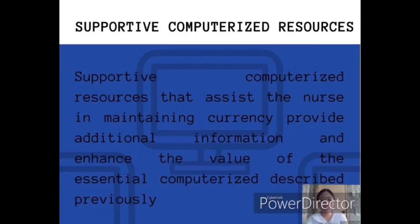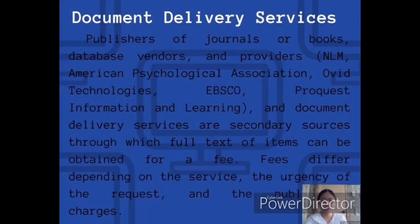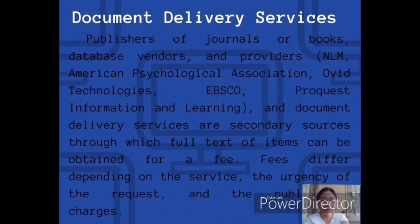Supportive computerized resources that assist the nurse in maintaining currency provide additional information and enhance the value of the essential computerized resources described previously. First, document delivery services: publishers of journals or books, database vendors, and providers such as NLM, American Psychological Association, Ovid Technologies, EBSCO, and ProQuest Information and Learning are secondary sources through which full types of items can be obtained for a fee. Fees differ depending on the service, the urgency of the request, and the publisher's charges.